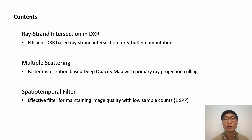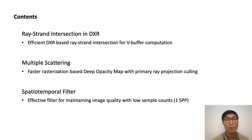There are three main aspects included in this talk. Firstly, I will introduce our efficient direct ray tracing-based ray-strand intersection method for VBuffer computation. Secondly, I will talk about our faster rasterization-based Deep Opacity Map with primary ray projection culling. Finally, I will introduce an effective spatial-temporal filter for maintaining image quality with low sample counts, even at one sample per pixel.